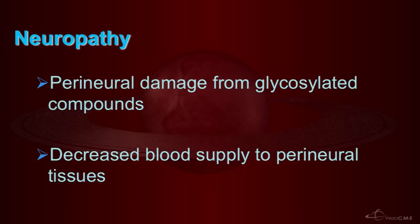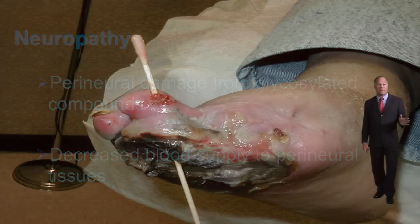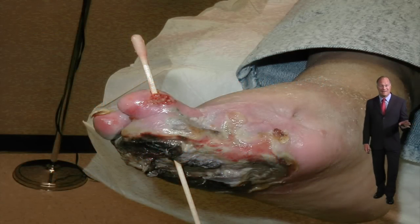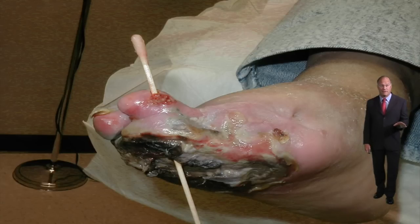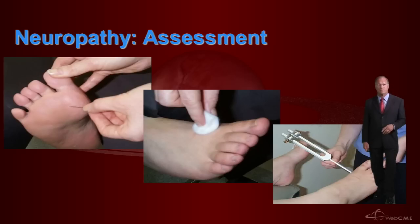Let's look at each etiological factor more closely. First, neuropathy: neuropathy results when there is damage to the perineural tissues, likely from glycosylated compounds and a decrease in blood supply to these tissues. Many diabetics have no feeling in their foot, as exemplified by this patient — he clearly could not feel the ulceration deteriorating to gangrenous change at the plantar aspect of his foot.